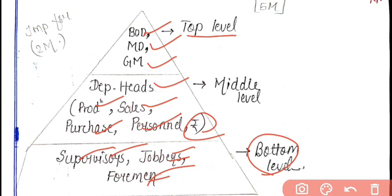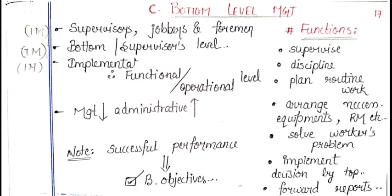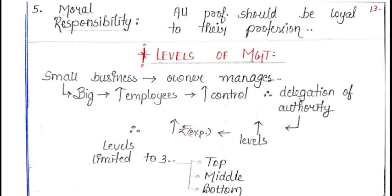These are the three levels of management and the people included in each. This topic is important for two marks — if asked for two marks, you draw the diagram and label it as shown. If asked for five marks, you explain each level in detail. The detailed explanation of each level of management will be covered in the next session.